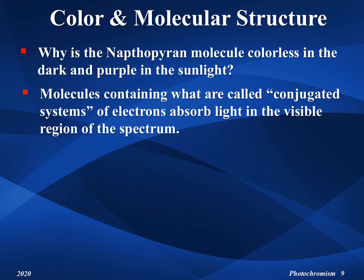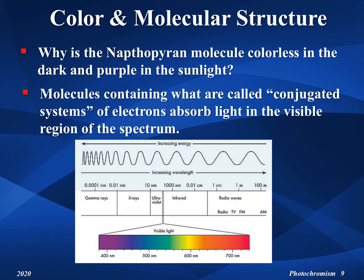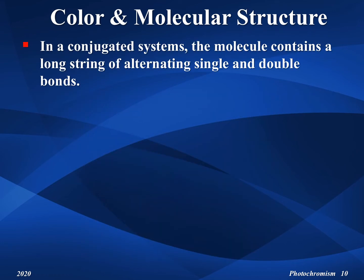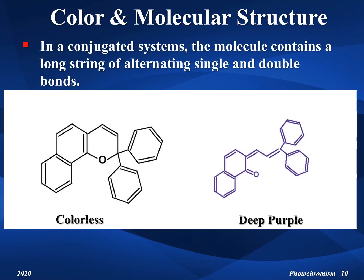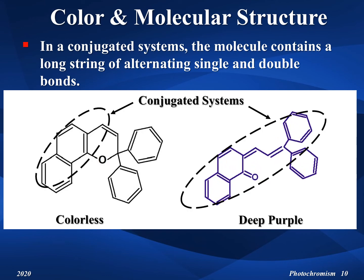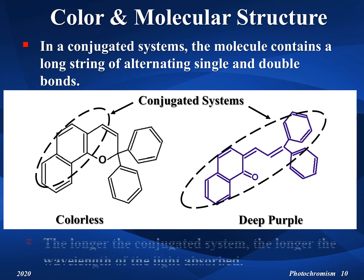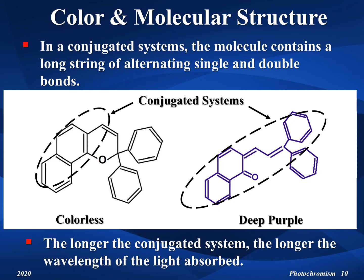The answer is that molecules containing what are called conjugated systems of electrons absorb light in the visible region of the electromagnetic spectrum. The diagram shows the electromagnetic spectrum — the longest wavelength of visible light is red, while the shortest is purple. Colorless substances absorb light only at shorter or longer wavelengths than visible light. A conjugated system is defined as a molecule that contains a long string of alternating single and double covalent bonds, as shown in the diagram. The longer the conjugated system, the longer the wavelength of light absorbed. In the dark, the naphthopyran form of the molecule absorbs a very short wavelength of light, not in the visible range, and is therefore colorless.